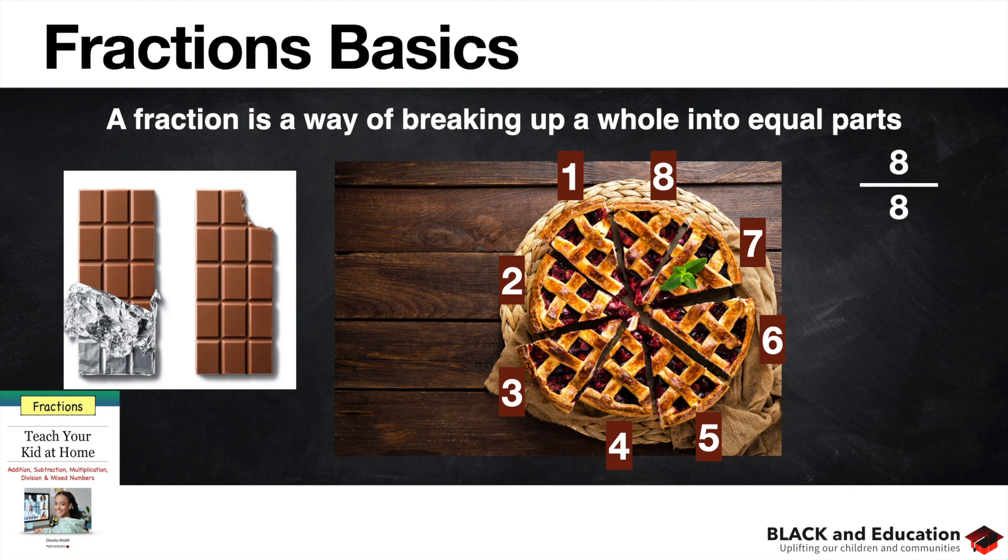The eight parts are going to be the denominator and the numerator is going to be what I'm going to deal with. So if I have a whole pie and I've broken it up into eight parts, if I give one person a piece of pie, I've given away one eighth of a pie. If I give a second person a piece of pie, now I've given away two slices. I've given away two eighths of a piece of pie.